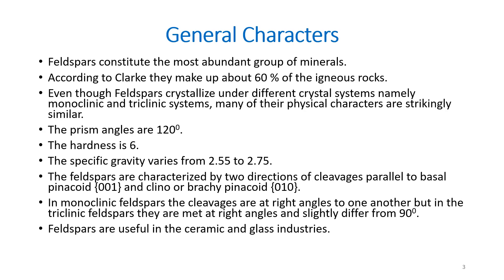The general characters of the feldspar group of minerals: they constitute the most abundant group of minerals, and according to Clark, they make up about 60% of the igneous rocks. Even though these feldspars crystallize under different crystal systems like triclinic and monoclinic systems, many of their physical properties are very strikingly similar.